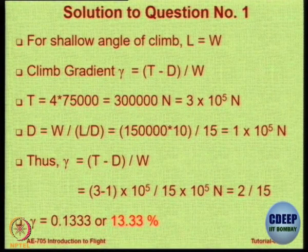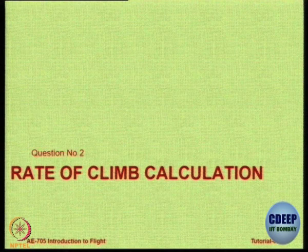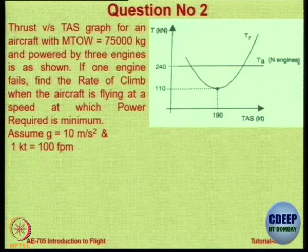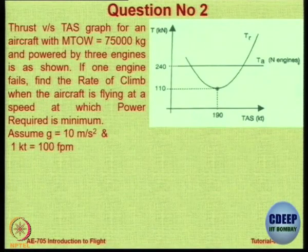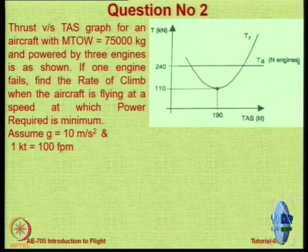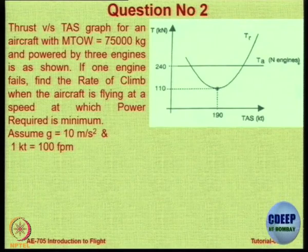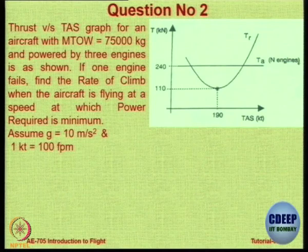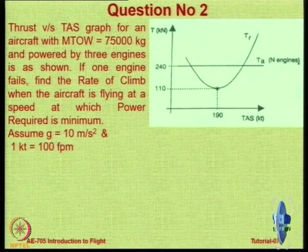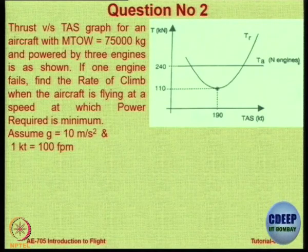Is that clear? The next step after getting the gradient is dH/dt. We have picked up an aircraft and obtained its thrust available and thrust required curve. The x-axis is true airspeed in knots and the y-axis is thrust in kilonewtons. The first question is: what kind of engine does this aircraft have? It is a jet engine, because the thrust available is a constant line.